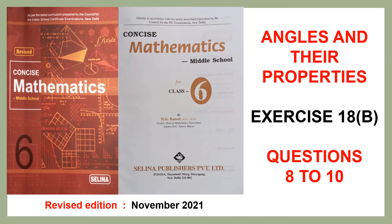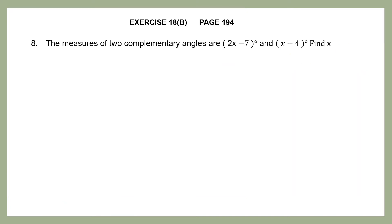Hello children, today we are doing angles and their properties — the last part of Exercise 18b, questions 8 to 10. This is found on page number 194. Question 8: the measures of two complementary angles are 2x−7 degrees and x−4 degrees. We have to find x.